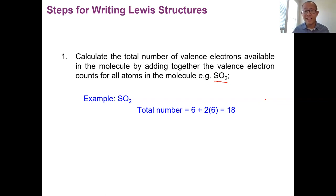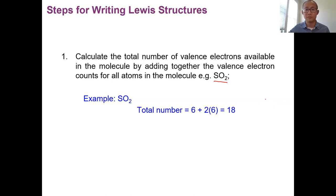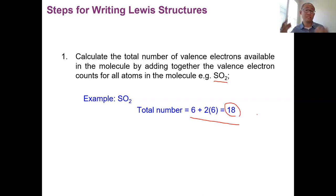Step one: calculate the total number of valence electrons available in the molecule — the total valence electrons of all atoms. SO2 has one S and two oxygens. Sulfur and oxygen are both in group six, so each has six valence electrons. Add them: six for sulfur plus two oxygens at six each. Total: 18 valence electrons for sulfur dioxide. We do this because bonding involves valence electrons only.